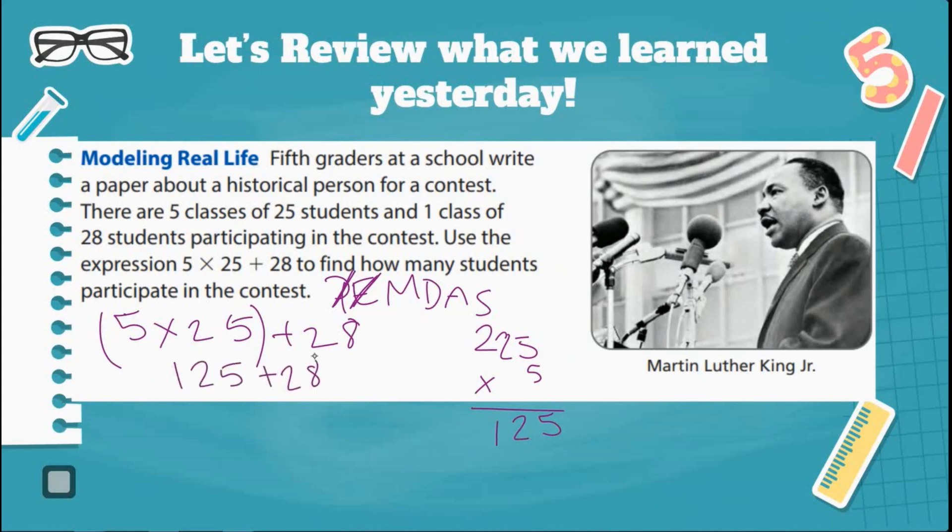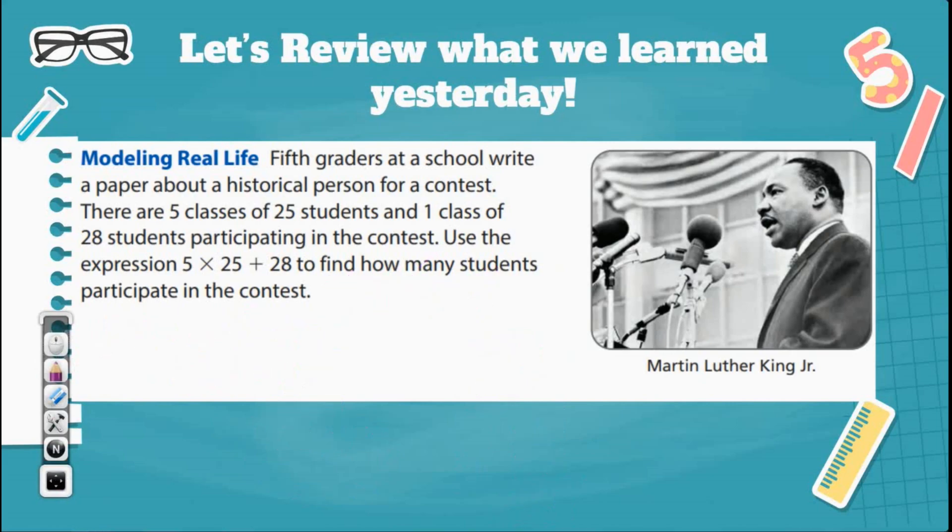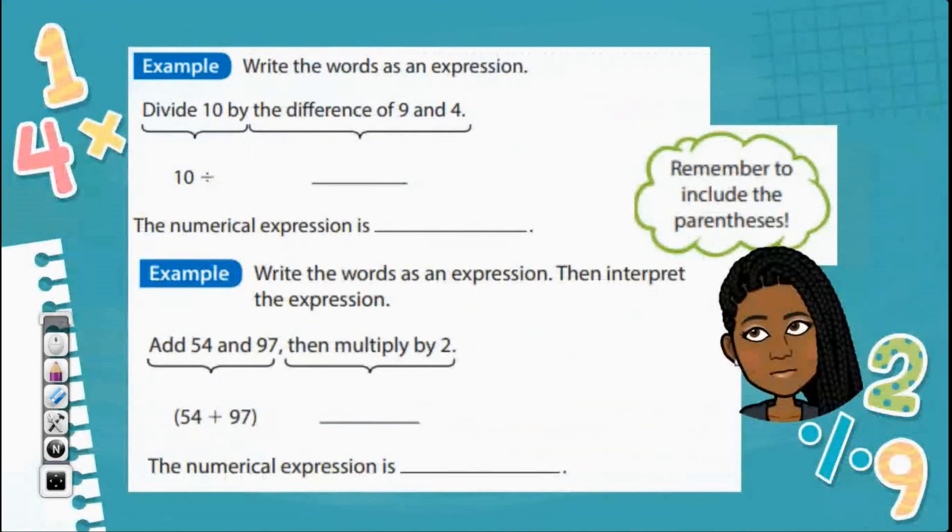Next, I need to add. I don't have multiplication. There's no division. And we're going to add next. So 125 plus 28. 8 plus 5, well that's 13. Carry the 1. 2 plus 2 is 4, 4 plus 1 is 5. Now I'm going to bring down the 1. And I get 153. So it says how many students participate in the contest? Well, 153 students. Very good.